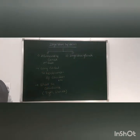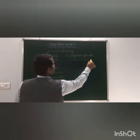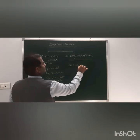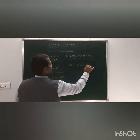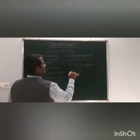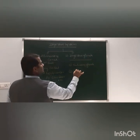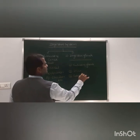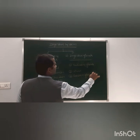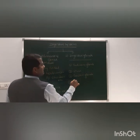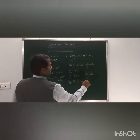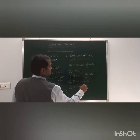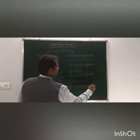Now, the digestive glands. The first one is the salivary glands. Second one is the liver. Third one is the gastric glands. Fourth one is the pancreas. And the fifth one is the intestinal glands.